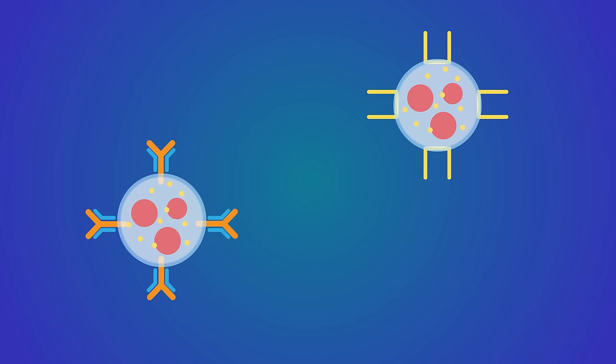Our adaptive immune system contains white blood cells known as T and B lymphocytes. These become activated during the first time or primary exposure to a pathogen.